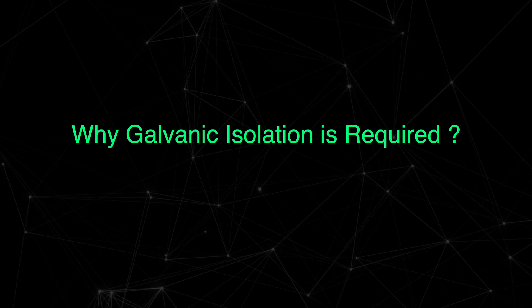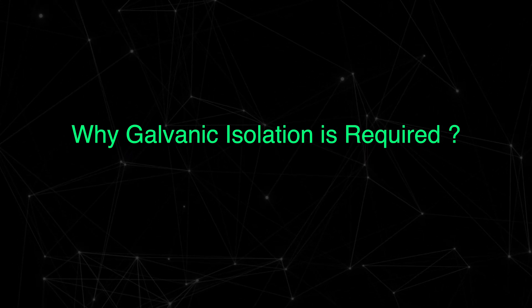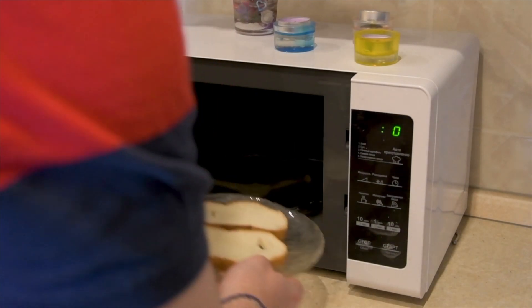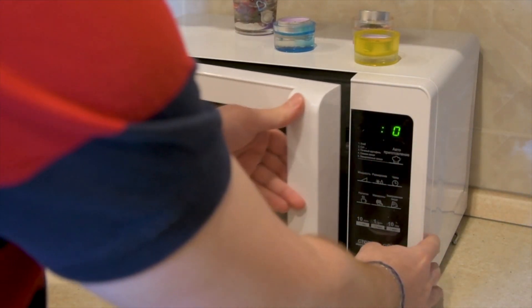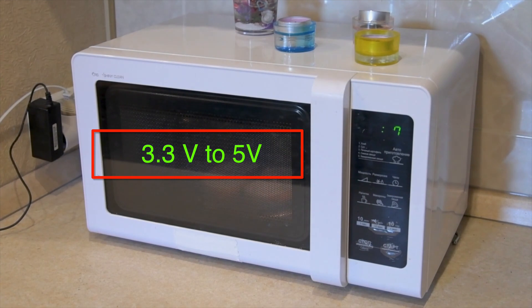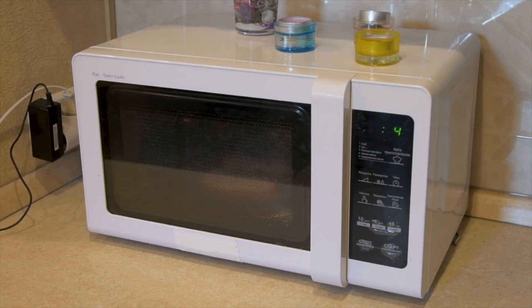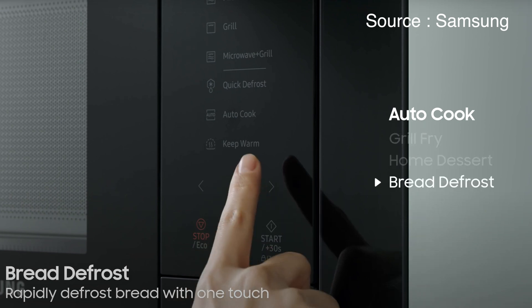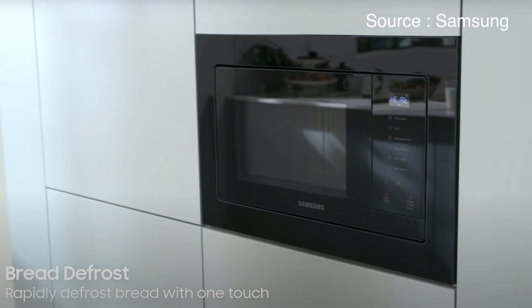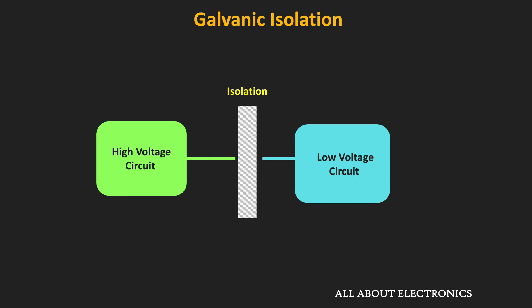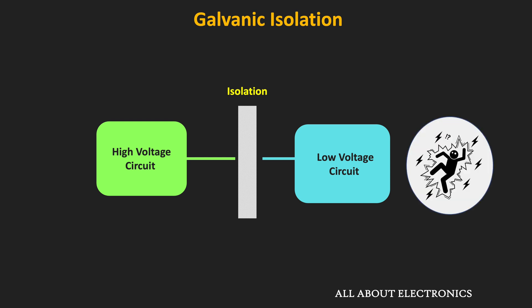To understand why galvanic isolation is required, let us take the example of the microwave oven. To heat food using microwaves, it requires a very high voltage like 3000 to 4000 volts. At the same time, it also requires a very low voltage like 3.3 to 5 volts to power up the display and the timers. Galvanic isolation separates this high voltage and the low voltage supplies, preventing the high voltage from reaching us through the push buttons and casing. In this way, it prevents the operator from shock hazards from the high voltage supplies.